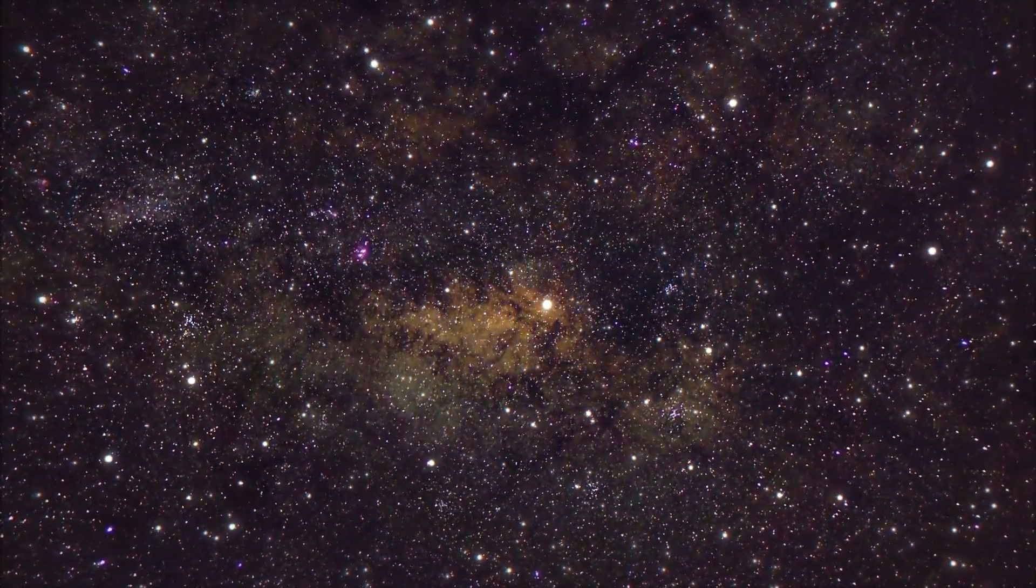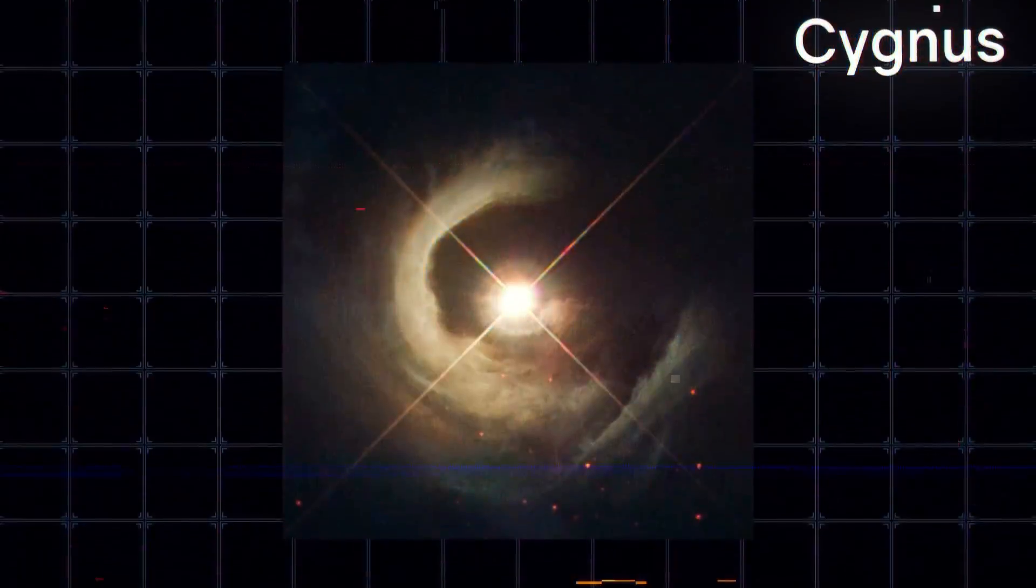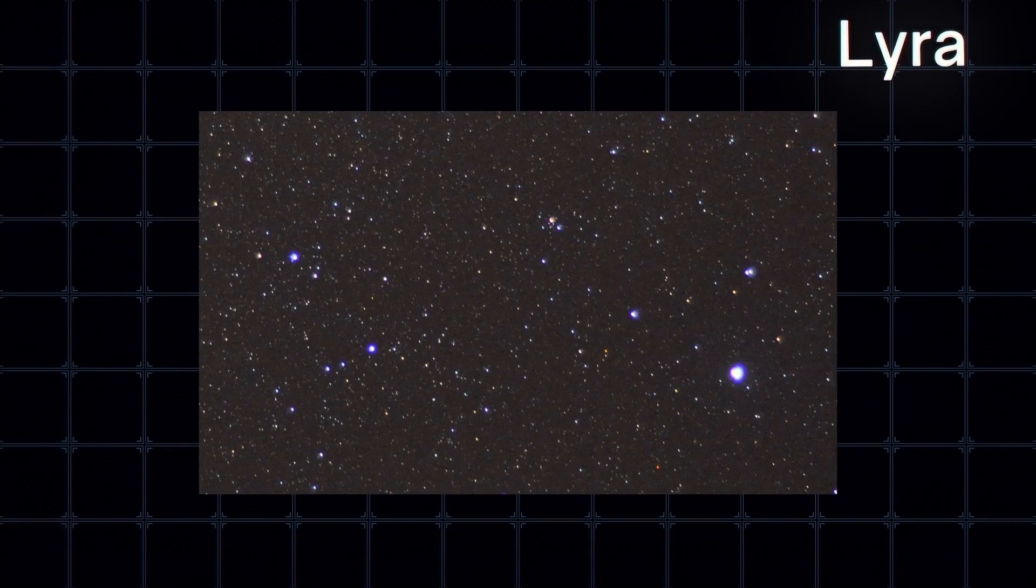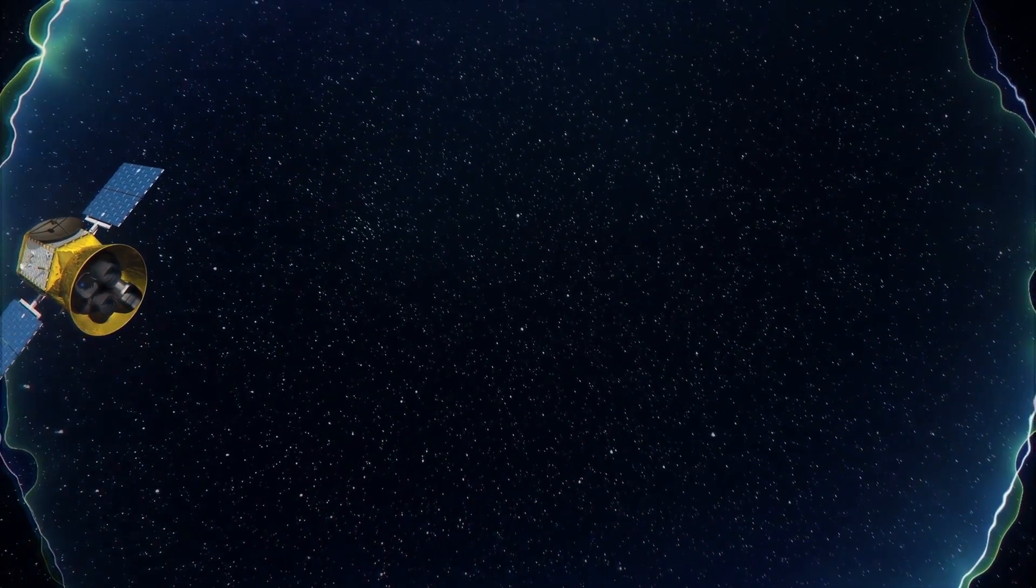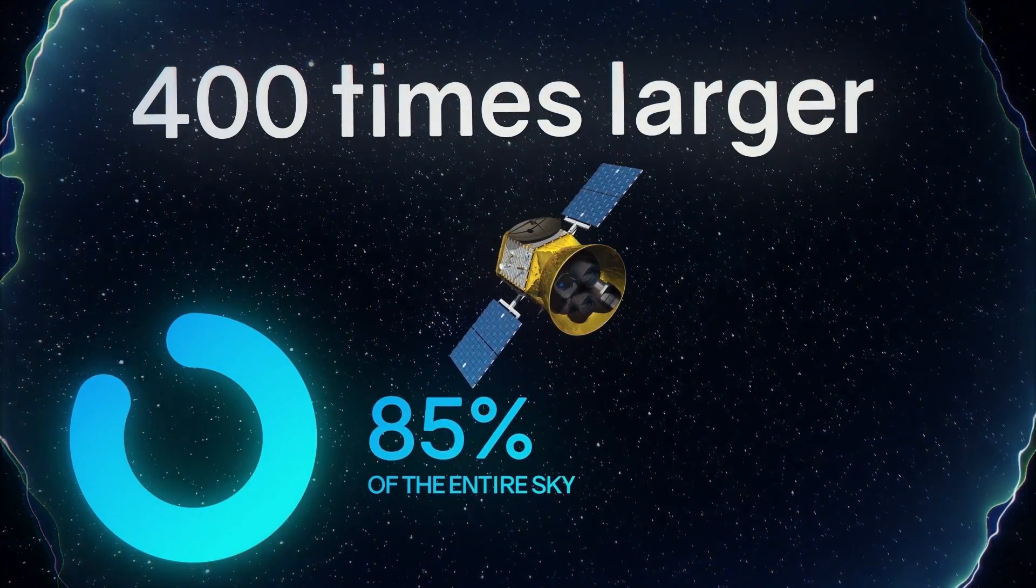This area holds the three constellations of the northern hemisphere of the celestial sphere: Cygnus, Lyra, and Draco. TESS searches in an area 400 times larger, which is 85% of the entire sky.